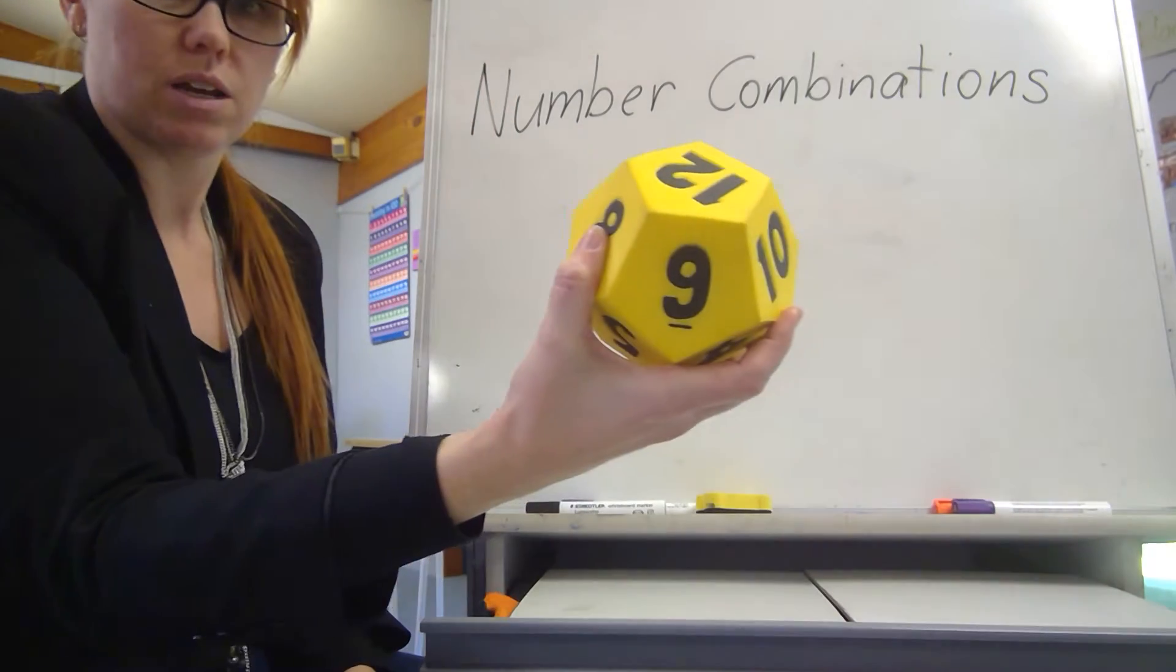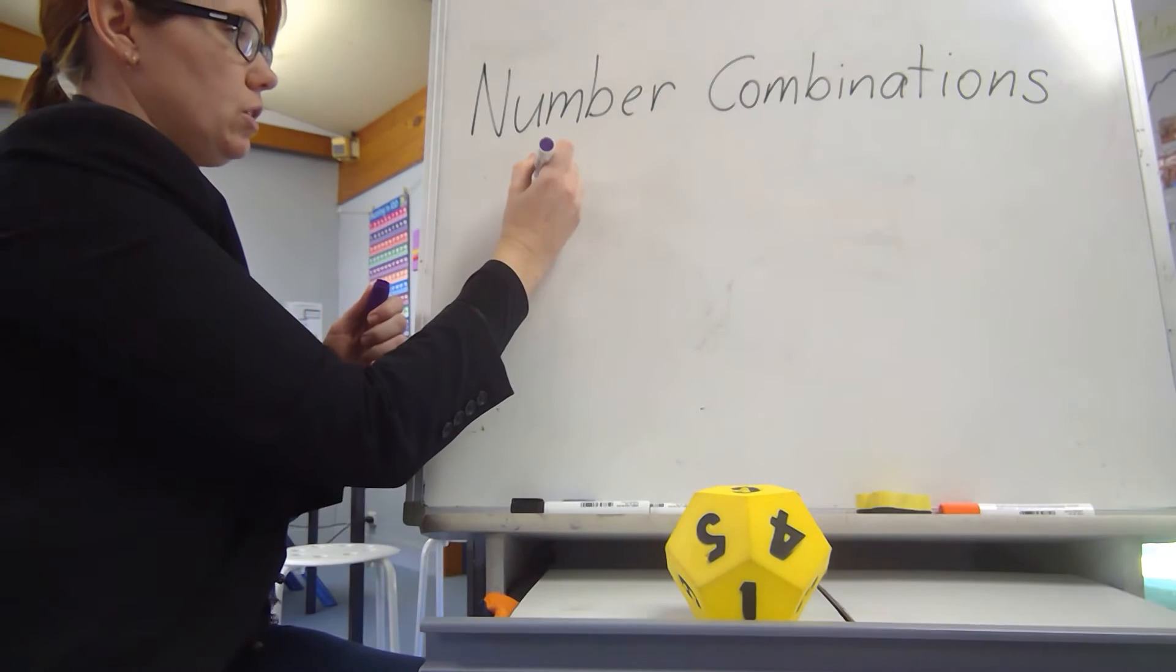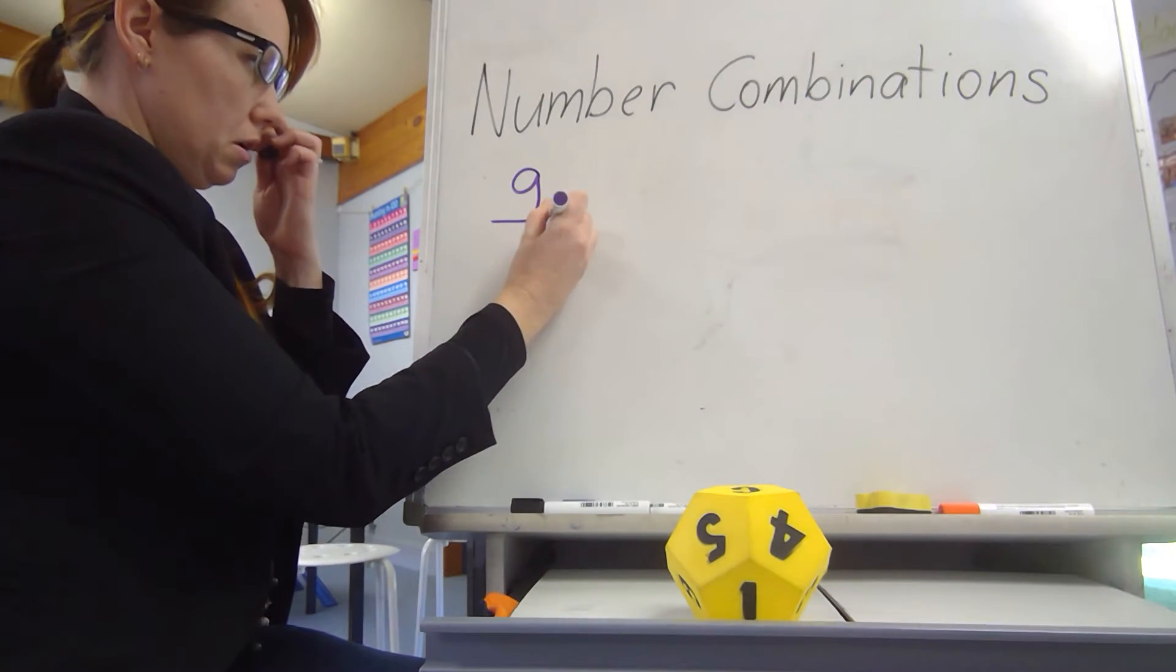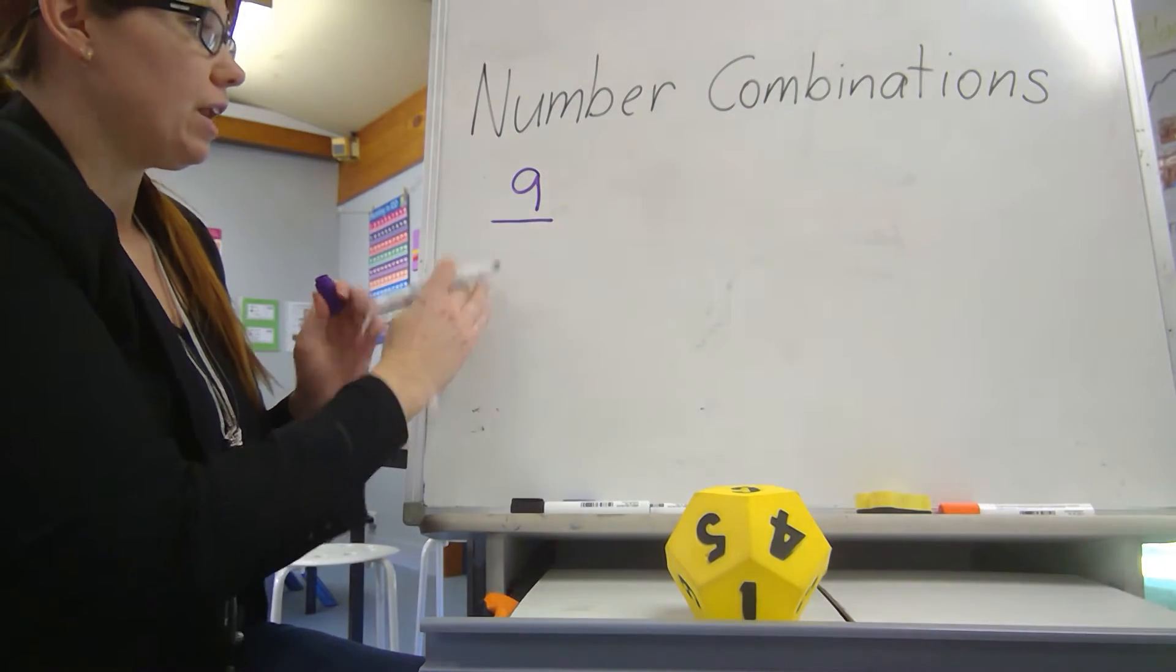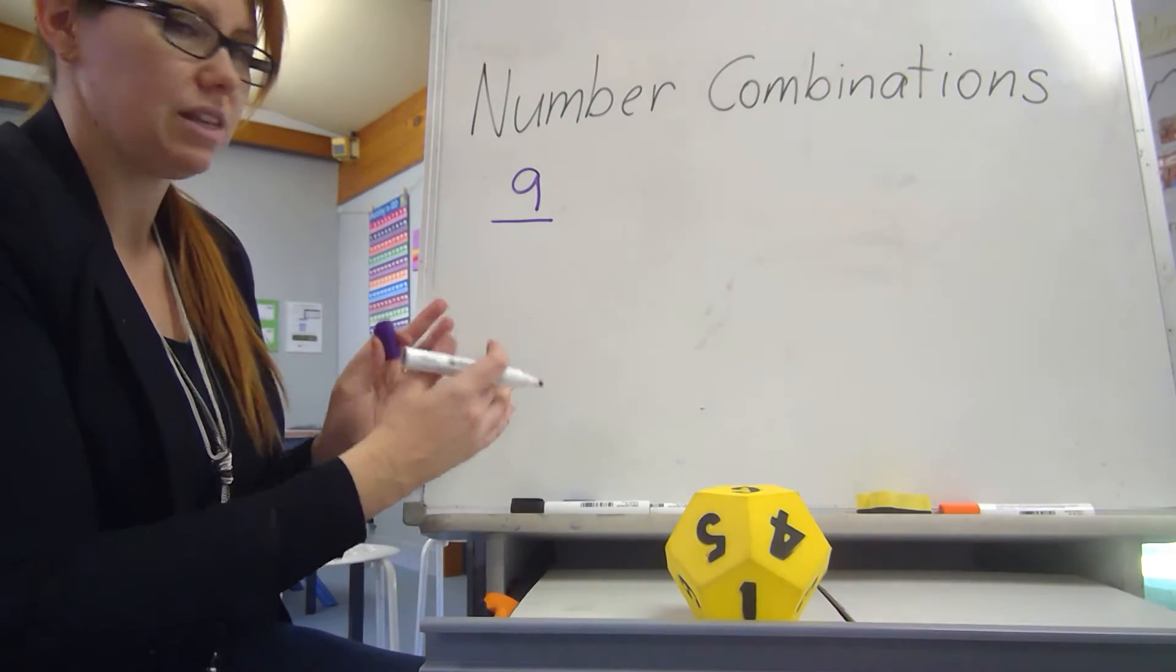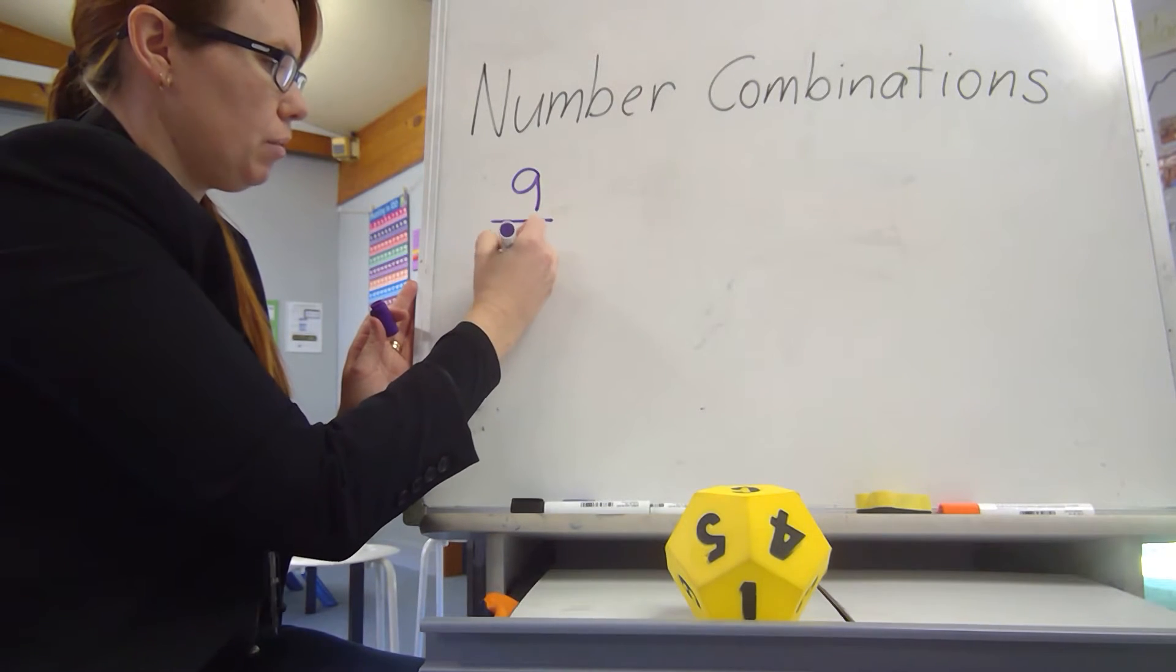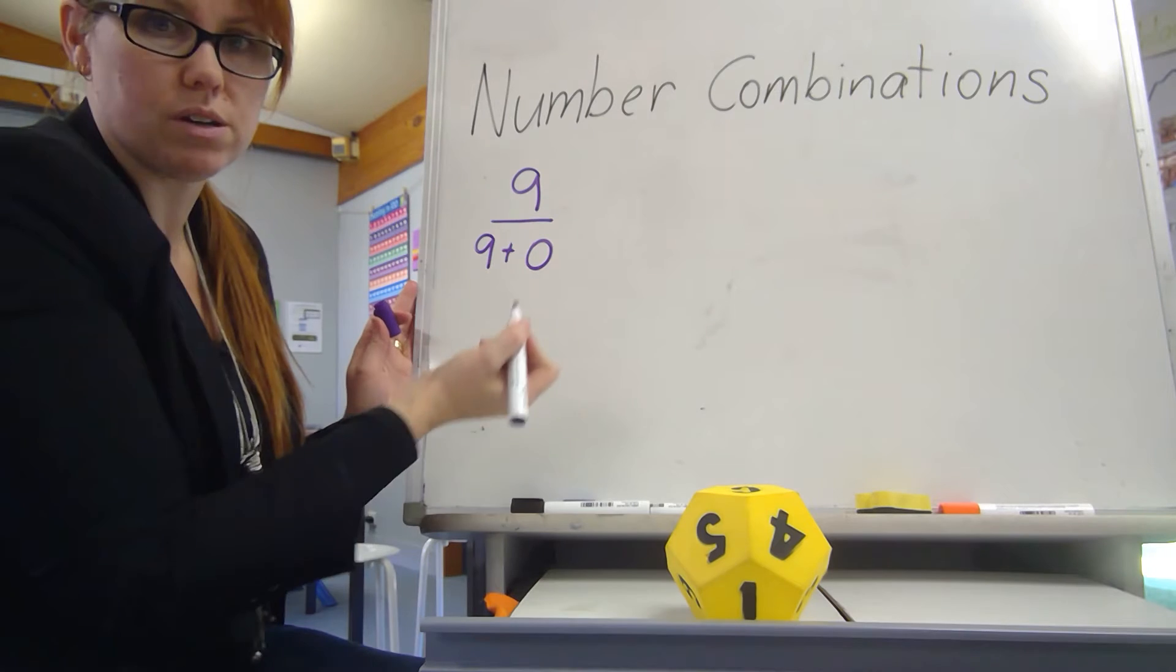And I've got 9. So I'm going to put 9, I'll use a different colour, at the top here. That's going to be mine. And I'm going to think of all the different number combinations where 9 is the answer. These are my friends of 9, my friendly numbers. So I know that 9 plus 0 equals 9.